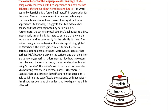Additionally, it suggests that Mia admires her beauty and that she is captivated by her own looks. Furthermore, the writer almost likens Mia's behaviour to a bird meticulously grooming its feathers to ensure they are in top shape — in Mia's case, ready for the brightly lit stage. The writer then goes on to describe the stylist sprinkling glitter on Mia's body. The word glitter refers to small reflective particles used to decorate things. Moreover, it suggests that perhaps Mia's beauty is only on the surface and that the glitter is a temporary, superficial adornment to hide how unpleasant she is beneath the surface. Lastly, the writer describes Mia as being a true star. The use of the metaphor refers to Mia believing she is a celestial body. Furthermore, it suggests that Mia considers herself to be a star on stage, able to light up the stage and dazzle the audience with her voice. This shows her delusions of grandeur and how highly she thinks of herself.